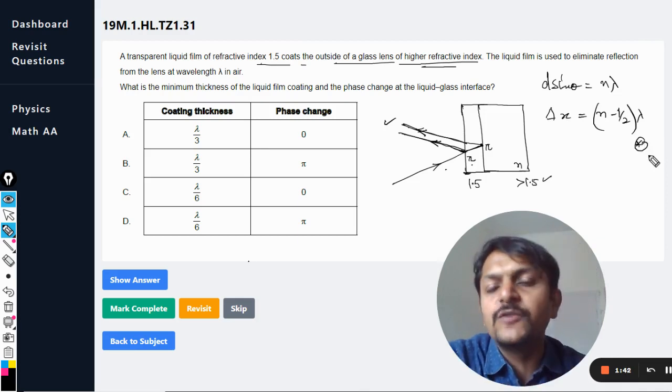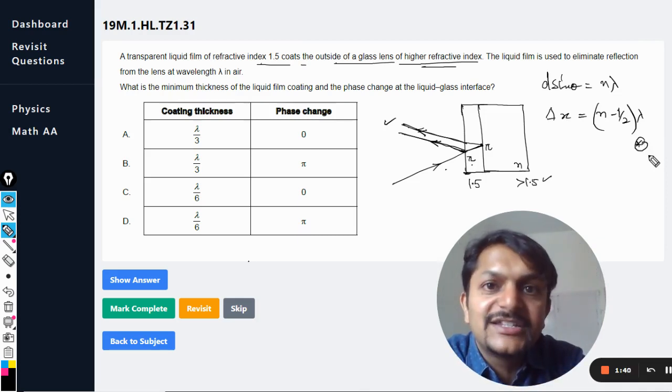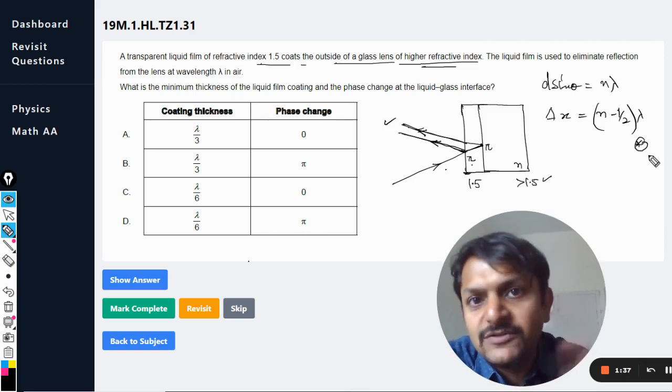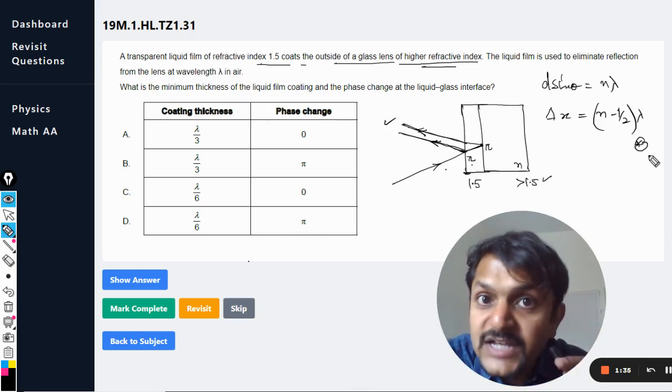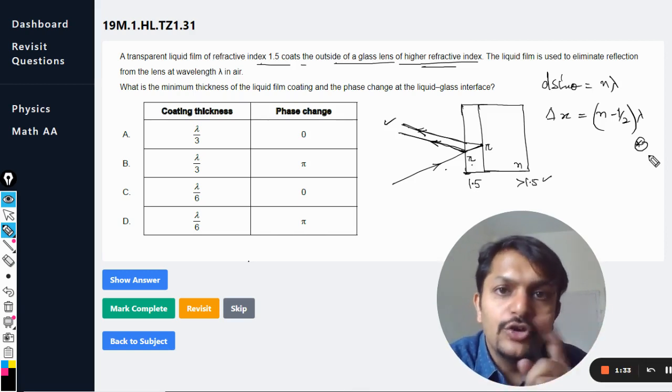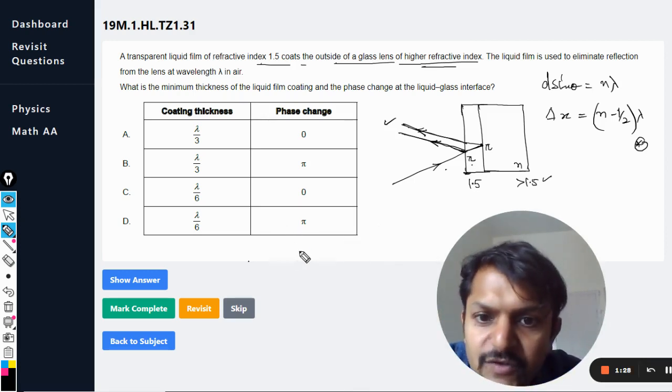And I believe you must be aware that why I use n minus half instead of n plus half, because in the data booklet and as well in the books the formula is n plus half, but I don't use that. So you have to see the previous questions to clarify that point. Okay, so in this case we want it to be destructive interference.